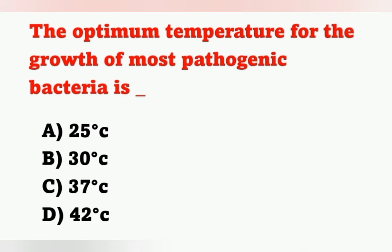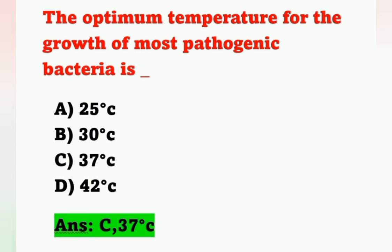The next question: the optimum temperature for the growth of most pathogenic bacteria. Options: Option A, 25°C; Option B, 30°C; Option C, 37°C; Option D, 42°C. The optimum temperature for the growth of most pathogenic bacteria is 37°C — Option C is the correct answer. The favorable temperature range for bacterial growth is 30–37°C, with 37°C being most favorable.